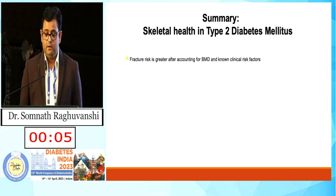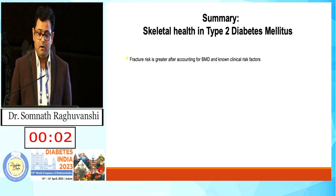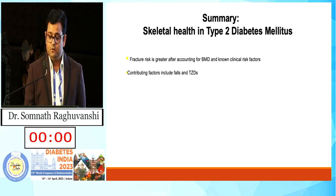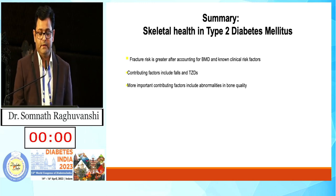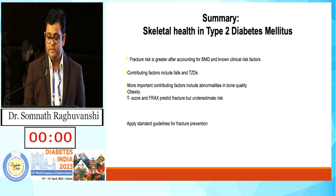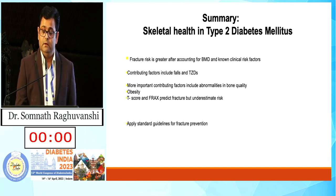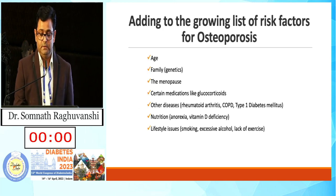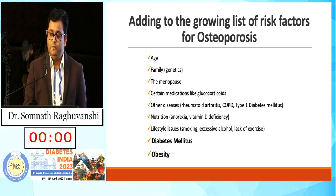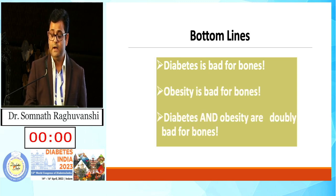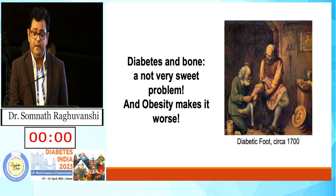In summary: fracture risk in diabetes is greater than accounted for by BMD and non-clinical risk factors. Contributing factors include falls, thiazolidinediones, and most importantly, abnormalities in bone quality and obesity. We should apply standard guidelines for fracture prevention, recognizing that T-score and FRAX underestimate the risk of fracture. Intensive glycemic control is important at all stages of diabetes. Diabetes and obesity should be included as risk factors for osteoporosis — diabetes is bad for bones, obesity is bad for bones, and both together are doubly bad for bones. Diabetes and bone: not a very sweet problem, and obesity makes it worse.